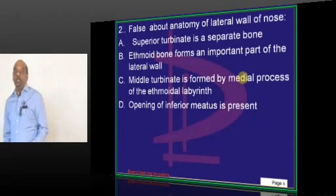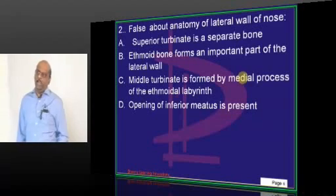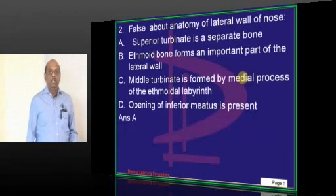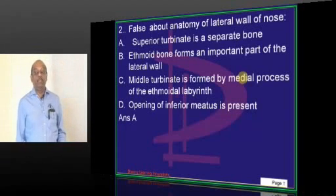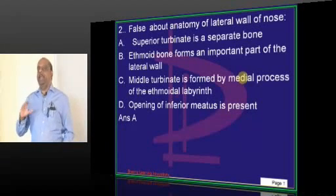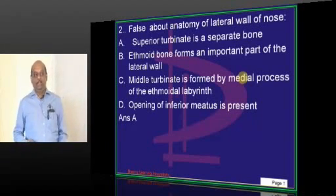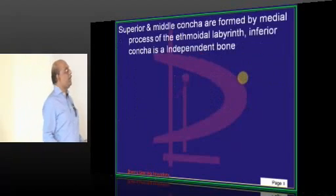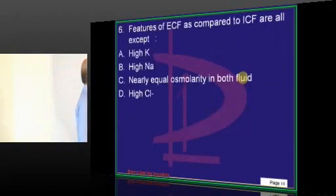Regarding the anatomy of the lateral wall of the nose: the inferior turbinate is a separate bone. The superior turbinate is not a separate bone — that is what you have to be very clear about.